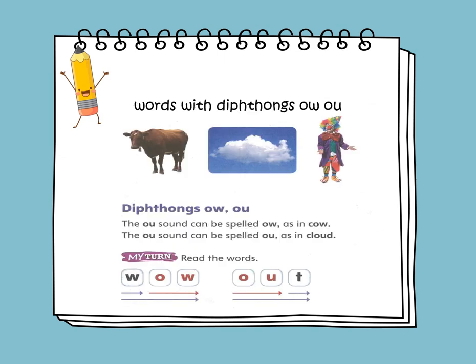Words with diphthongs OW and OU. Now let's name the pictures. We see a cow, cloud, and clown. The OW sound can be spelled OW as in cow, or spelled OU as in cloud. Now let's read the words here. We have WOW and OUT.